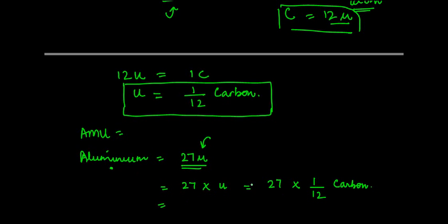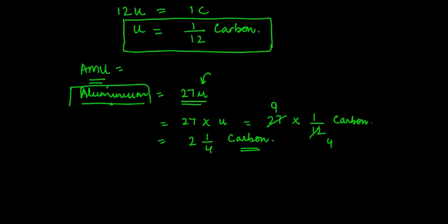If you solve it out, you can actually get 2 and 1/4 times of a carbon atom. So each of the elements which is there - it could be aluminium or any other element - the mass of its atom is now written in comparison to the mass of a carbon atom.